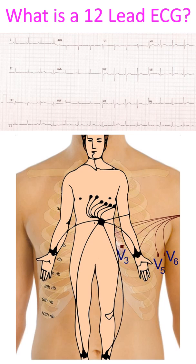Standard limb leads are: Lead 1 — left arm positive, right arm negative; Lead 2 — left foot positive, right arm negative; and Lead 3 — left foot positive, left arm negative.